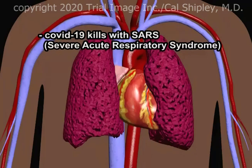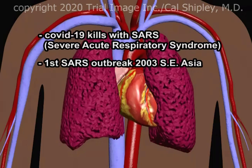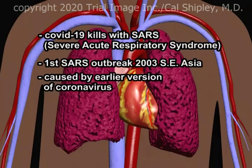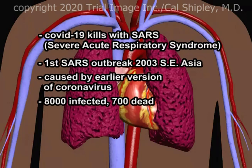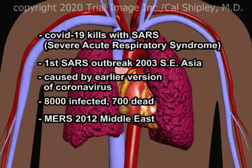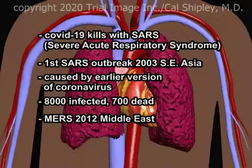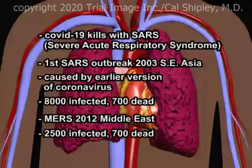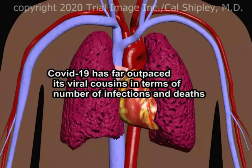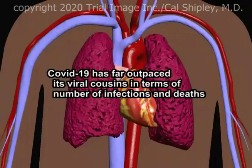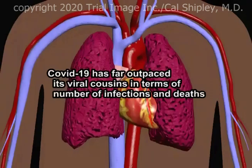The first notable outbreak of SARS occurred in 2003 in Southeast Asia. This outbreak was caused by a different version of the coronavirus than today's COVID-19, and sickened about 8,000 people worldwide with over 700 deaths. Another form of SARS, known as MERS — Middle East Respiratory Syndrome — occurred in 2012, with 2,500 confirmed cases worldwide and over 700 deaths. As of the recording of this presentation, over 400,000 cases have been confirmed in the United States alone with over 12,000 deaths, and so COVID-19 has already far outpaced its viral cousins.